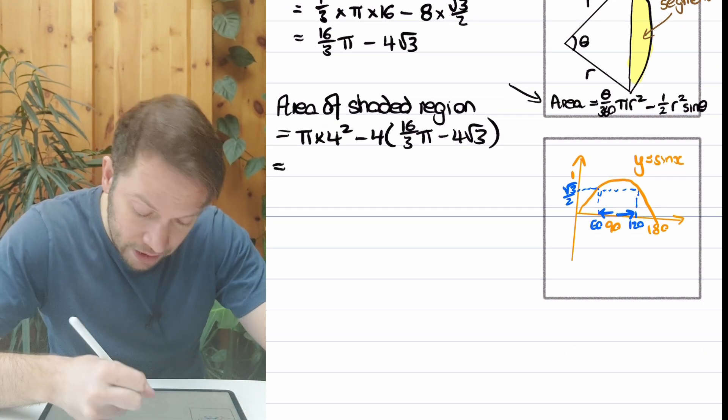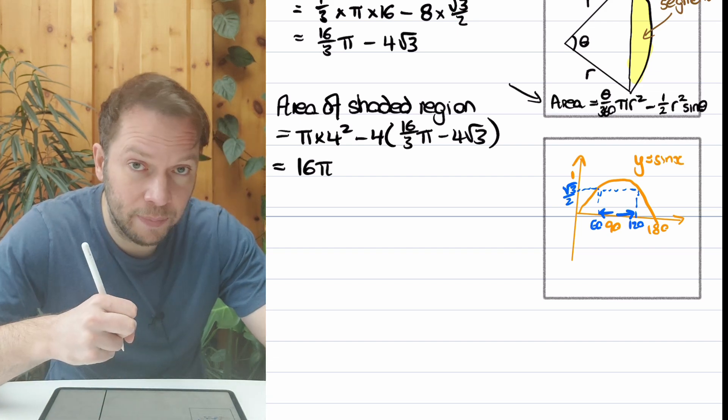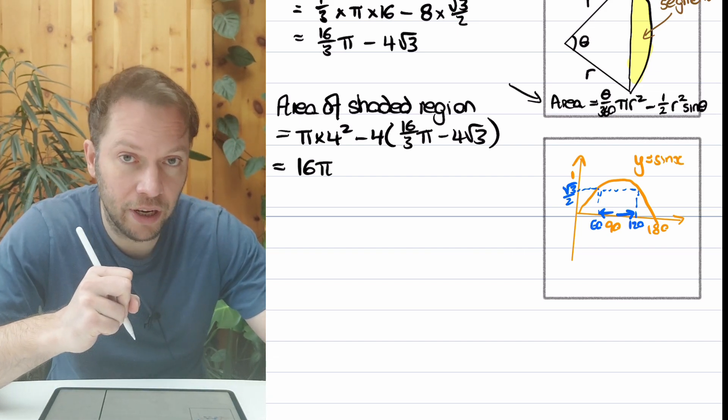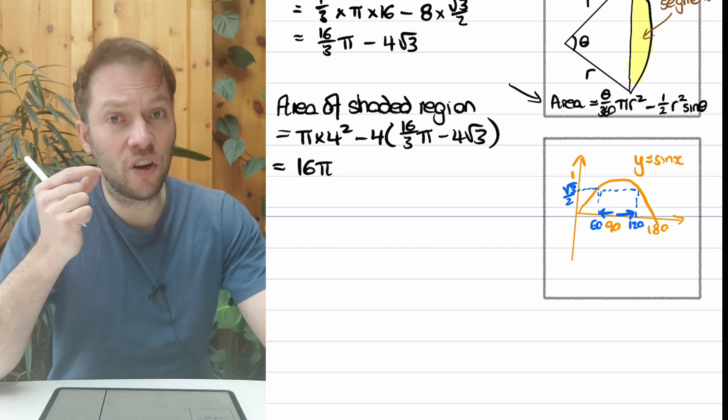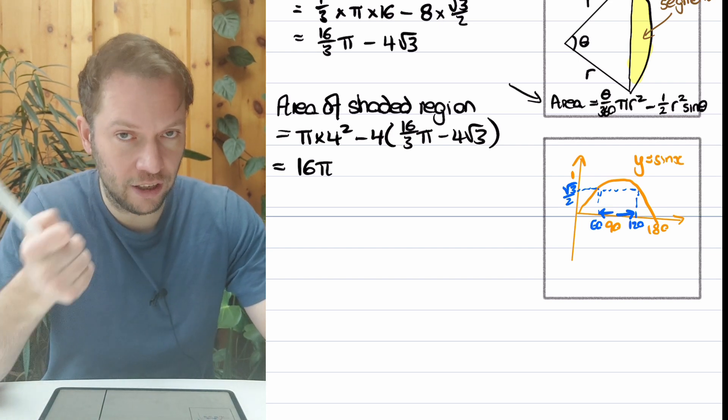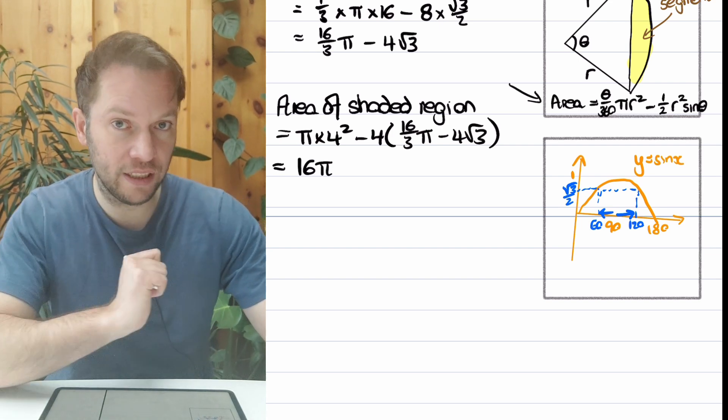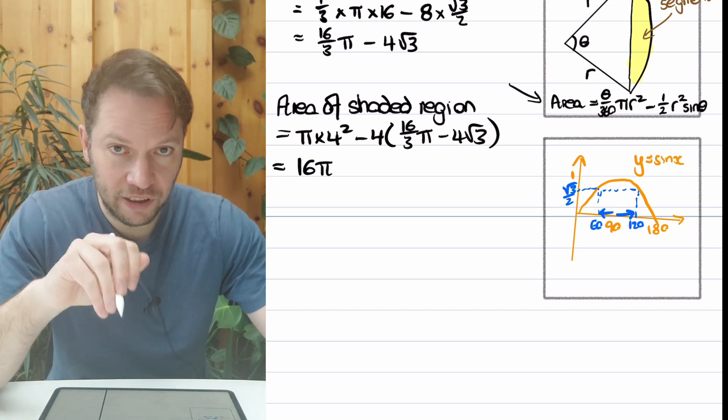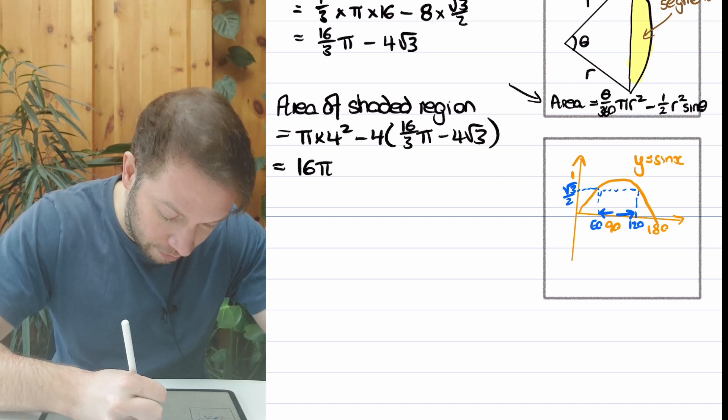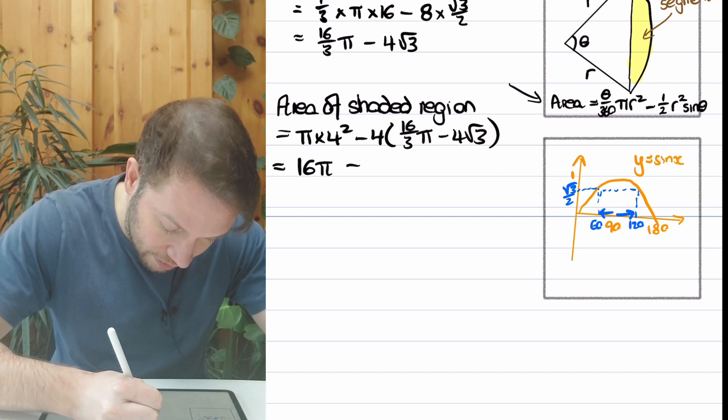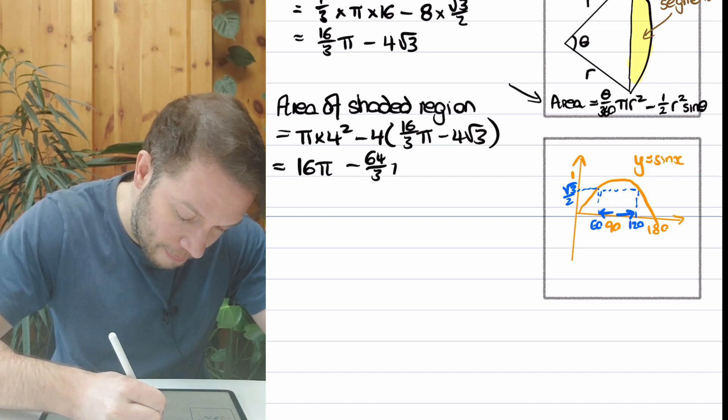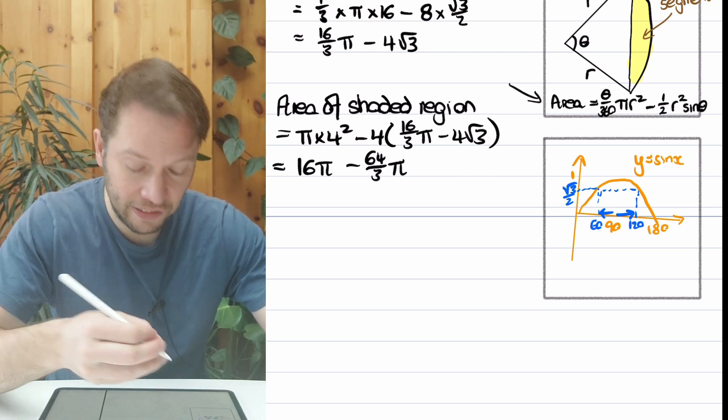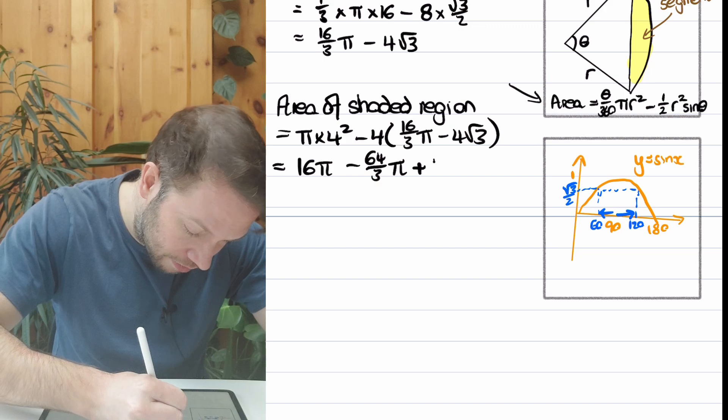Let's just simplify. π times 4² is 16π. Let's try and expand these brackets. We've got minus 4 times 16/3 π. Remember, when you times a fraction by a non-fraction, it only affects the numerator of the fraction. So when we do 4 times 16/3, you do the 4 times the 16, so it's 64/3. So we've got minus 64/3 π. And now we're going to do minus 4 times minus 4√3. Minus 4 times minus 4 is 16, so it's plus 16√3.